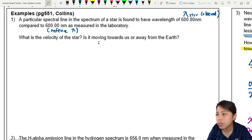What is the velocity of the star? Is it moving towards or away from us? So before we plug in everything, I want us to think about the change in wavelength. The original wavelength is 600, then you see it become a bit longer.